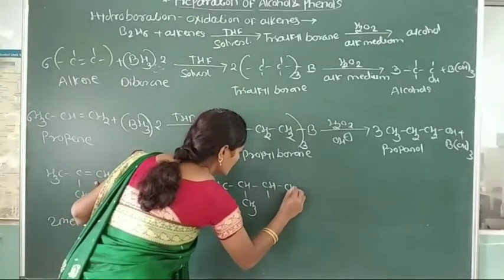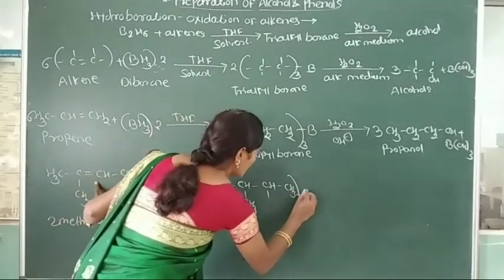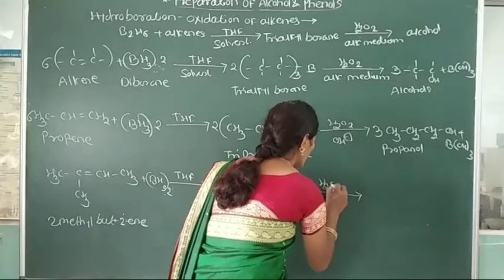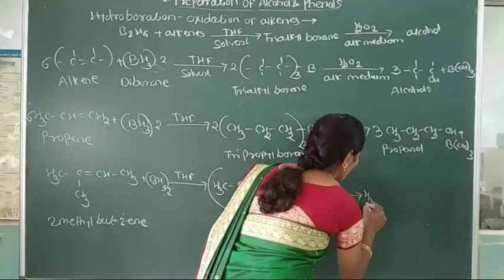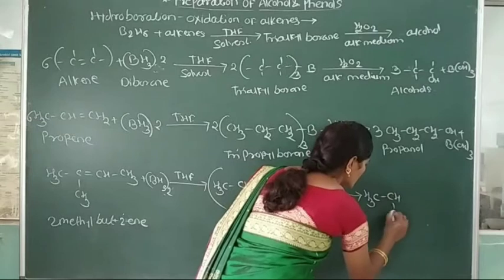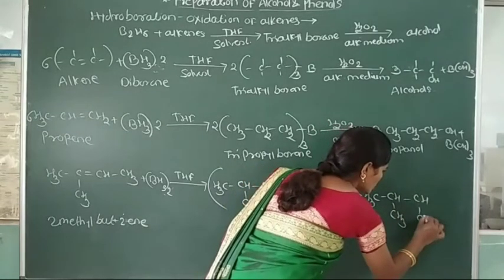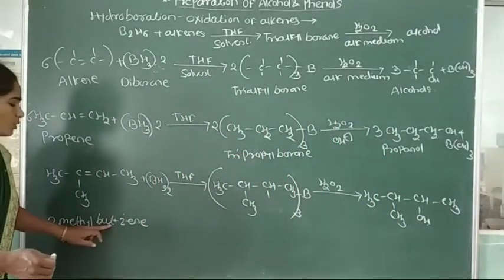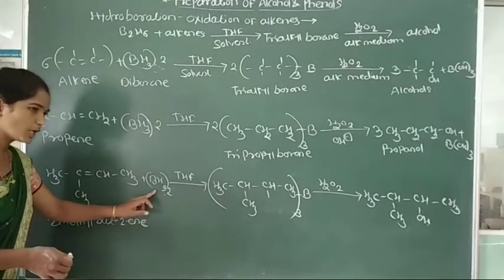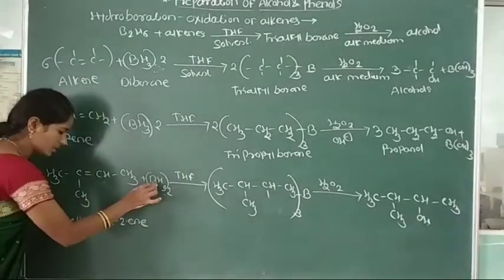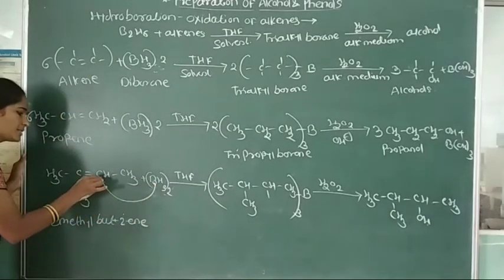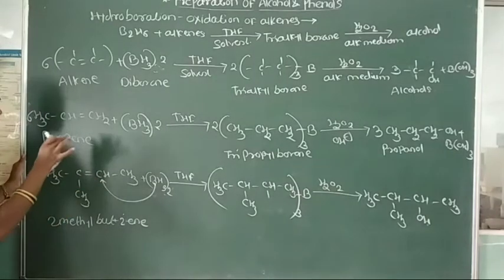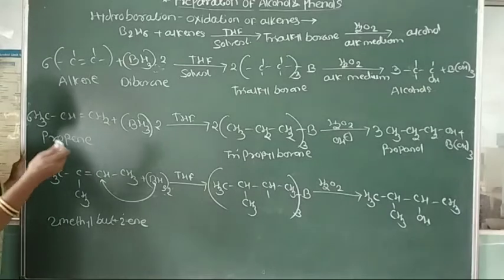This trialkyl borane is oxidized in presence of hydrogen peroxide. Here formation of CH3-CH(CH3)-CH(OH)-CH3. In this reaction, boron is attached to the carbon carrying the maximum number of hydrogen atoms. The carbon atom with no hydrogen atoms does not receive boron; boron is attached to the less substituted carbon.